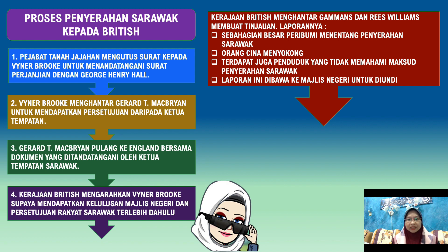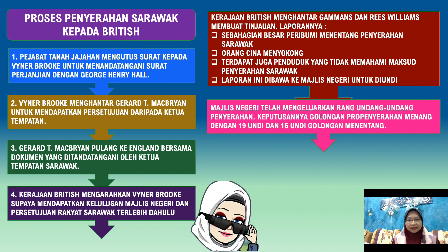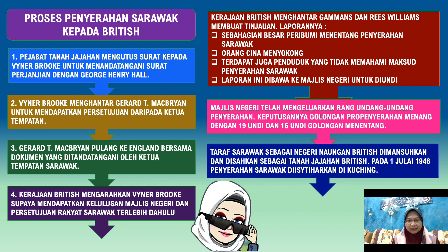Sebahagian besar peribumi menentang penyerahan Sarawak. Terdapat juga golongan yang menyokong dan golongan yang tidak memahami maksud penyerahan Sarawak. Laporan ini kemudiannya dibawa ke Majlis Negeri untuk proses pengundian. Majlis Negeri telah mengeluarkan rang undang-undang penyerahan. Keputusannya, golongan pro-penyerahan telah menang dengan 19 undi. Taraf Sarawak kemudiannya telah ditukar daripada negeri naungan kepada tanah jajahan British.